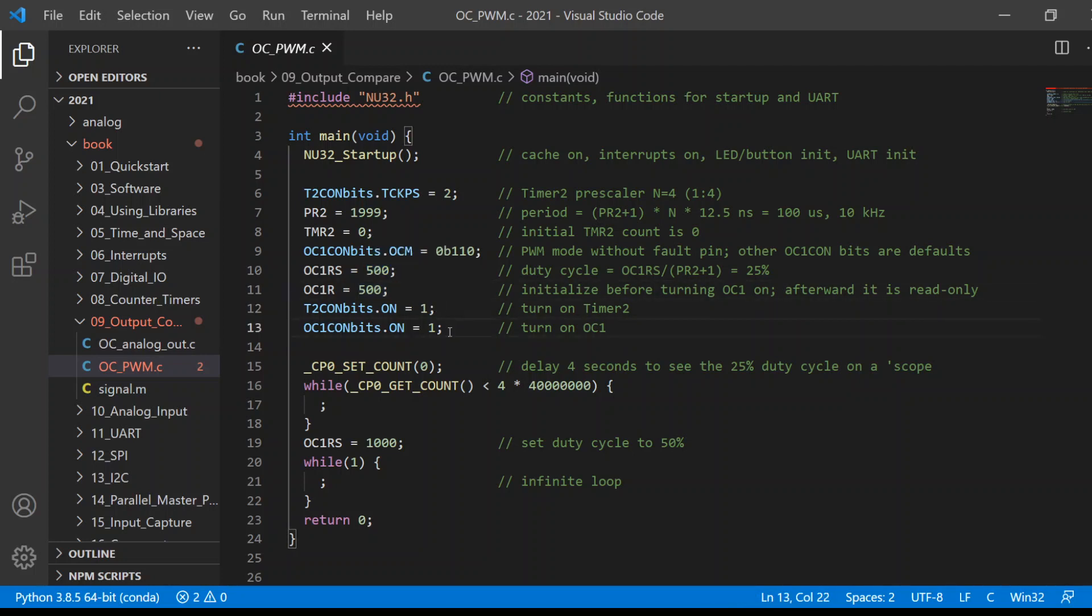And here we have a delay of four seconds. So for the first four seconds this code runs, we would have a duty cycle of 500 out of 2000. Then after those four seconds, we would change OC1R to 1000 out of a maximum of 2000. So for the first four seconds, we would have a 25% duty cycle because 500 is 25% of our maximum. And then from then on, we would have a value of 50% duty cycle because OC1R is 1000 out of the maximum of 2000. So how many different levels of duty cycle can you have? It's the value of PR2.